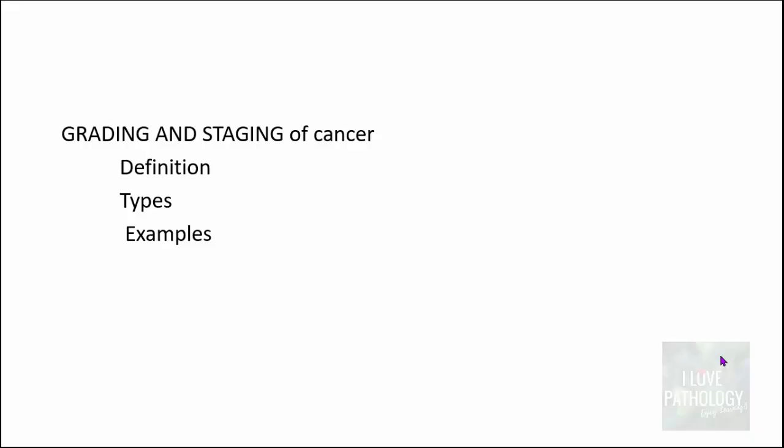To summarize: grading means how abnormal the cells look under the microscope — G1, G2, G3, G4 (well differentiated, moderately differentiated, poorly differentiated, and undifferentiated), or as simply as low grade and high grade. Staging is essentially the TNM staging system.